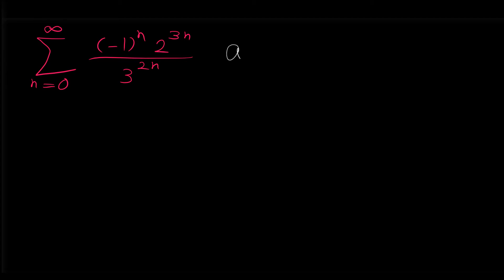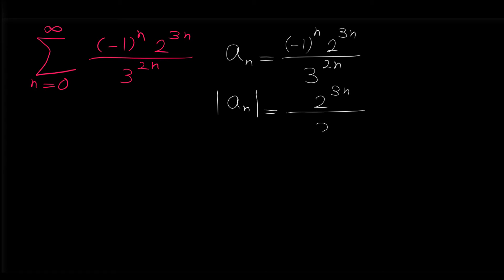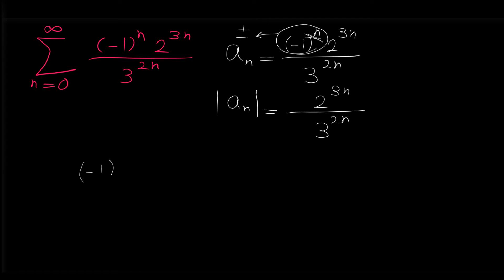First, let's name a sub n to be negative 1 to the n times 2 to the 3n over 3 to the 2n. Note that the absolute value of a sub n is 2 to the 3n over 3 to the 2n — the negative 1 to the n disappears. When we put the absolute value around a sub n, the negative 1 to the n cancels, because absolute value makes negatives positive. Negative 1 to the n is always 1 or negative 1, and absolute value makes negative 1 into positive 1, so it cancels.